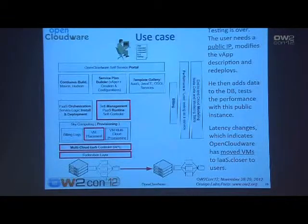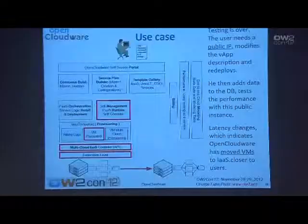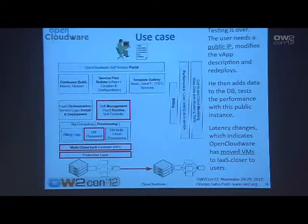When testing is done, the user wants to go to production. They will give a public IP which is maybe closer to where their customers are. Imagine the customers are in Brazil — they put some real data in the database and put the platform into production. Because the customers are in Brazil, the infrastructure-as-a-service will actually migrate some of the virtual machines to a data center which is closer to the customer, in order to reduce the latency. That's another SLA being taken into account at the multi-IaaS layer.